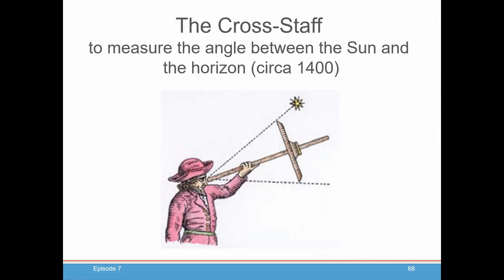The way this was measured in the past, a long time ago, was with the cross staff, which would measure the angle between the sun and the horizon, or between Polaris and the horizon. And as you can tell, this is probably not the safest thing to do, and it's probably the reason you saw pirates wearing eye patches.